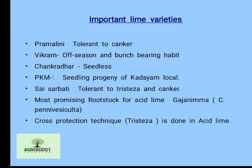Important lime varieties are Pramalini, Vikram, Chakradhar, PKM1, and Sai Sharbati. Pramalini is tolerant to bacterial canker disease. Vikram is an off-season variety with bunch bearing habit. PKM1 is a seedling progeny of Kadayam local region. Sai Sharbati is tolerant to tristeza and canker disease. Gajanima, scientific name Citrus pennivesiculata, is the most promising rootstock for acid lime.